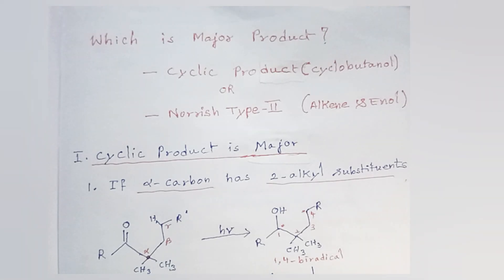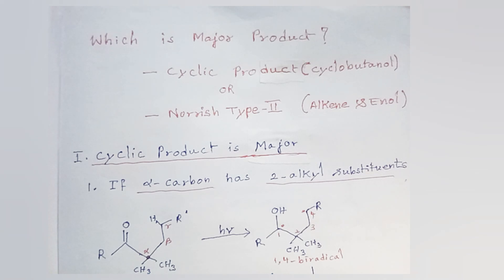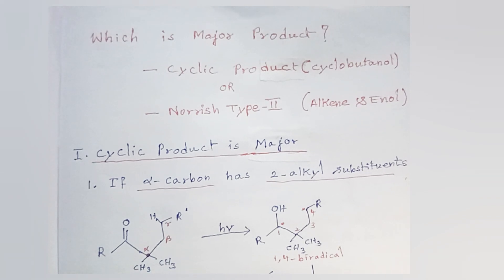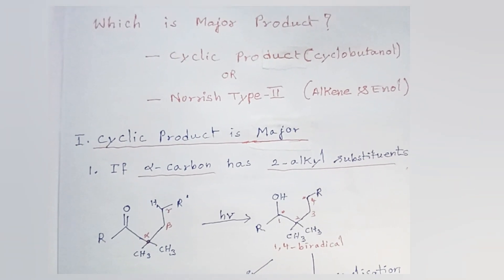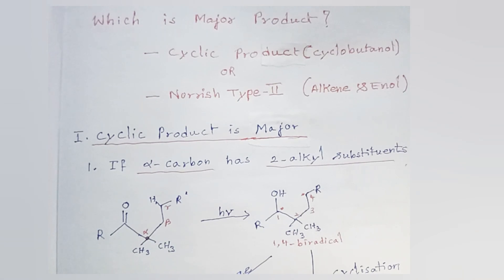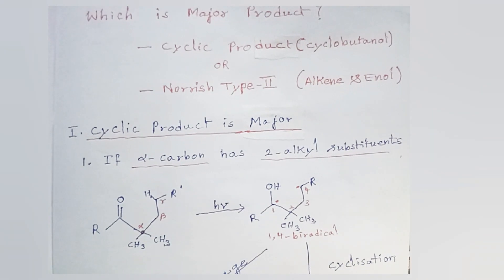Compounds with gamma hydrogen, upon irradiation by UV light, will give either a cyclic product or Norrish type 2 reactions. Let's see when the cyclic product is major and when the Norrish type 2 reaction is major.